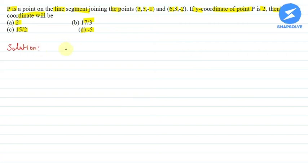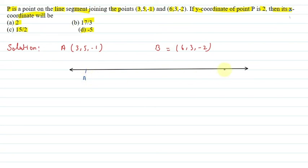Let's say this point is A, this is (3,5,-1), and this point is B, (6,3,-2). So we can see that this is a line joining the points. Let's say this is our line, this point is A and this point is B, and the line segment is divided. Let's say this point is P, and this point divides in ratio λ:1.